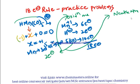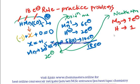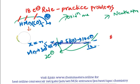Now checking the neutral atom method: every atom is considered neutral. Neutral Mn contributes 7 valency electrons, neutral hydrogen contributes 1 electron, and five CO ligands contribute 10 electrons. Total: 7 + 1 + 10 = 18 electrons. Both methods give the same result; the complex is stable according to the 18-electron rule.